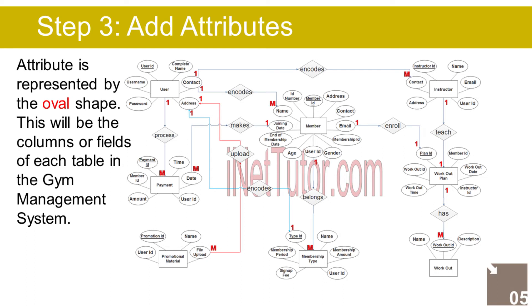The Member entity has the following attributes: Member ID (Primary Key, represented with underline), ID number, name, address, contact, email, gender, age, joining date, end of membership date, Membership ID (Foreign Key), User ID (Foreign Key).